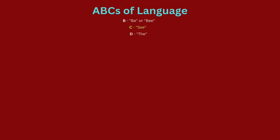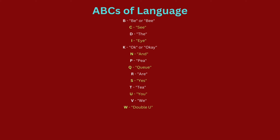ABC's of Language: B, D, I, OK, P, Q, R, S, T, U, V, W, X, Y.